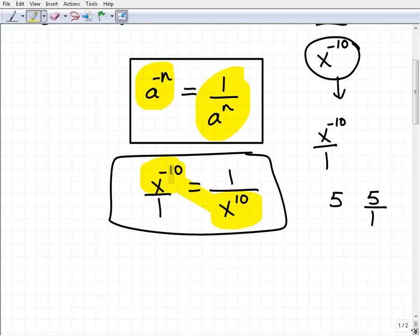Here I have x to the negative 10th in the numerator. If I just put that whole power down into the denominator, the exponent becomes positive.